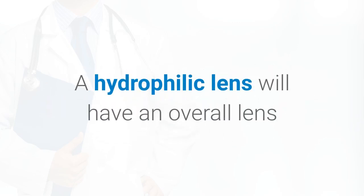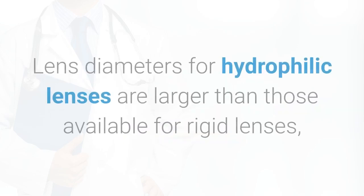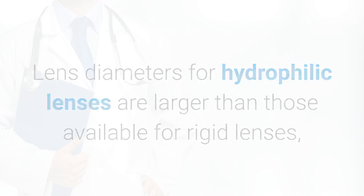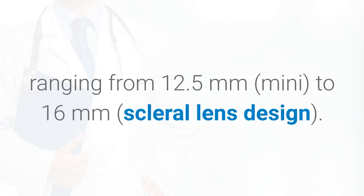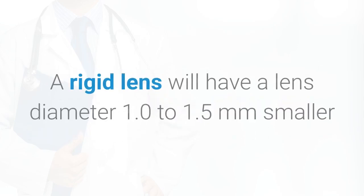A hydrophilic lens will have an overall lens diameter approximately 1 to 1.5 millimeters larger than the visible iris diameter. Lens diameters for hydrophilic lenses are larger than those available for rigid lenses, ranging from 12.5 millimeters for mini designs to 16 millimeters for scleral lens designs. The diameters most commonly used for hydrophilic lenses range between 13.8 to 14.5 millimeters.